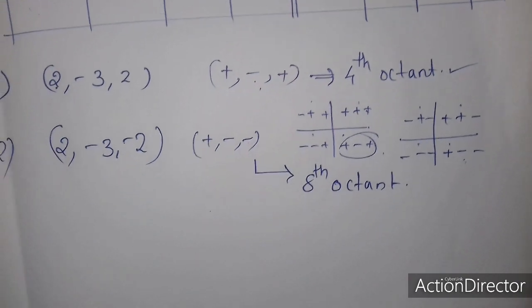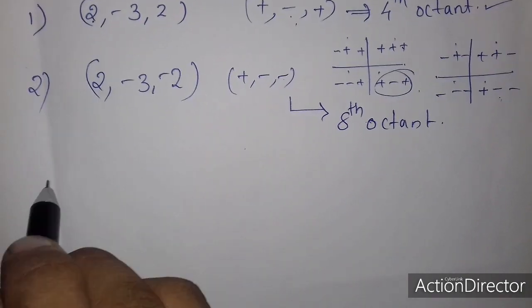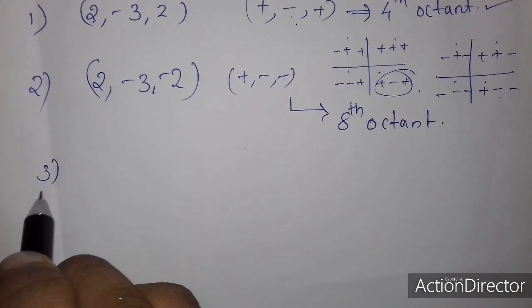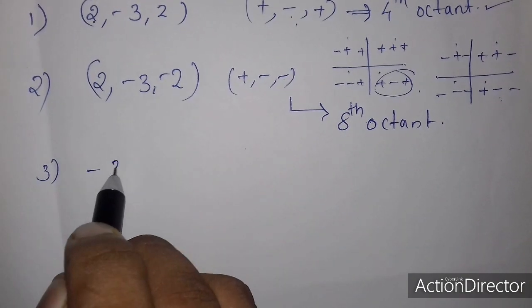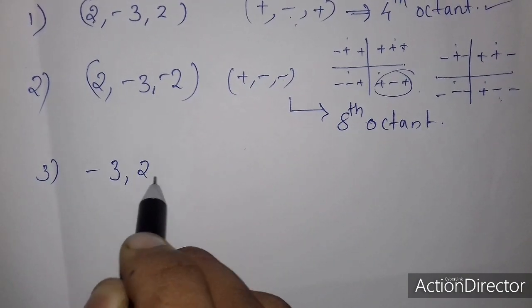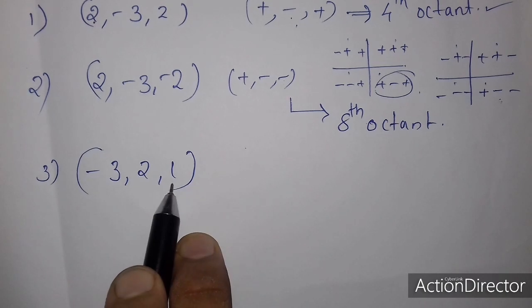We are going to show you the next example. The point is (-3, 2, 1). The last number, z, is positive — so we note that as plus one.